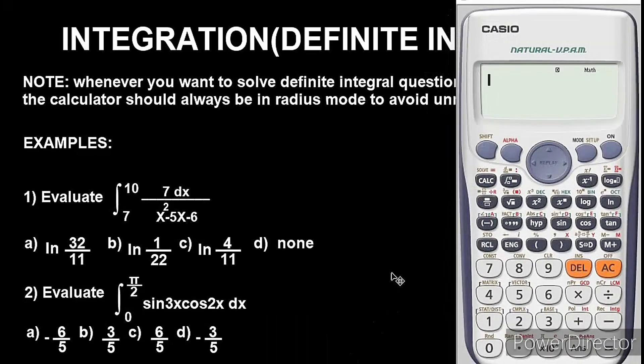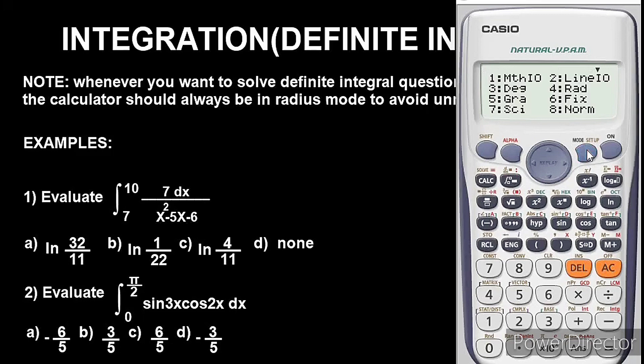Okay the first thing you have to do will be to put the calculator in radian mode. As you can see the calculator is in degree. To change it from degree to radian mode you simply press shift, this mode button, after pressing shift go for category 4. This stands for radian.